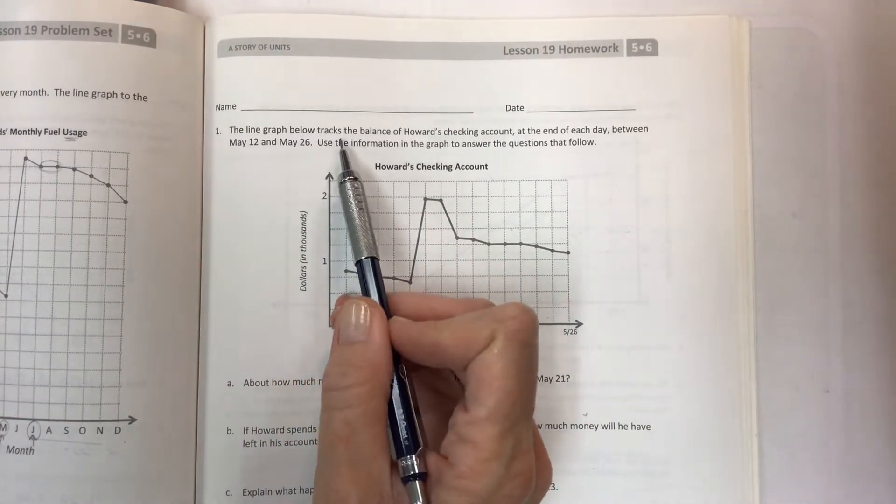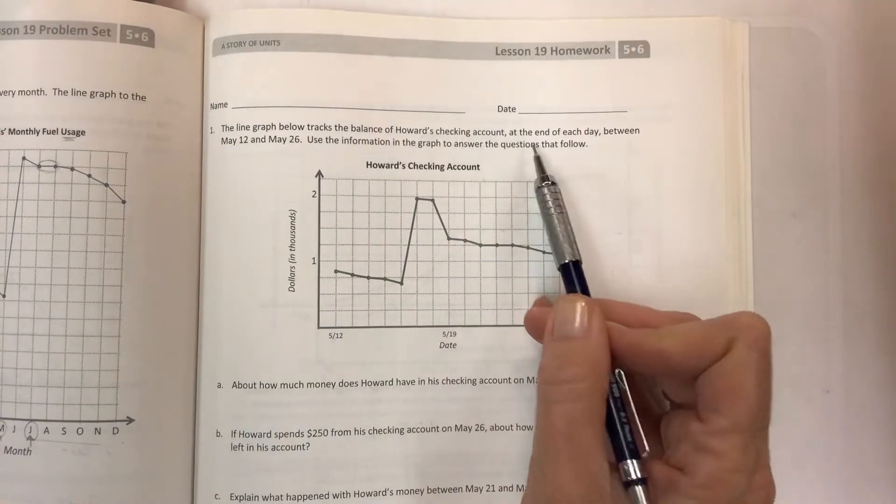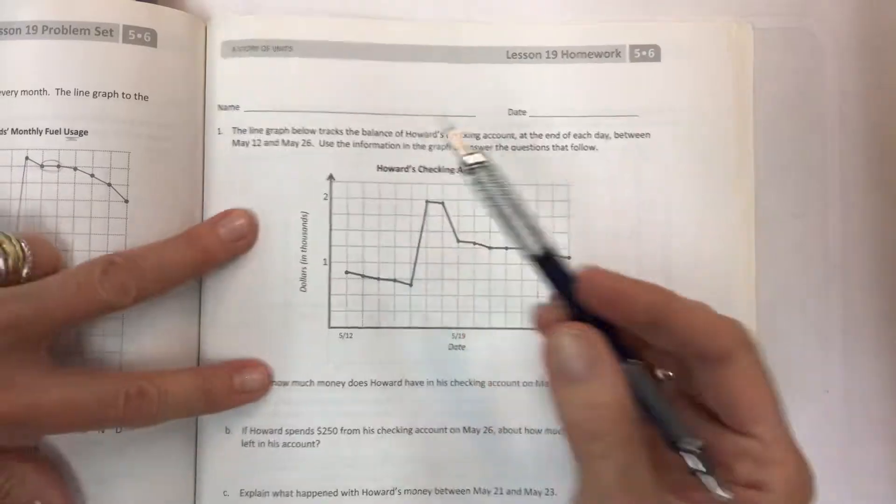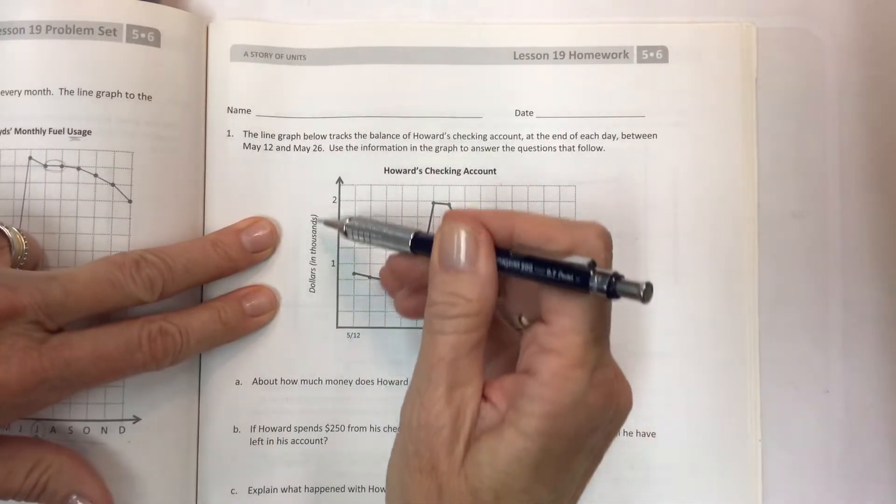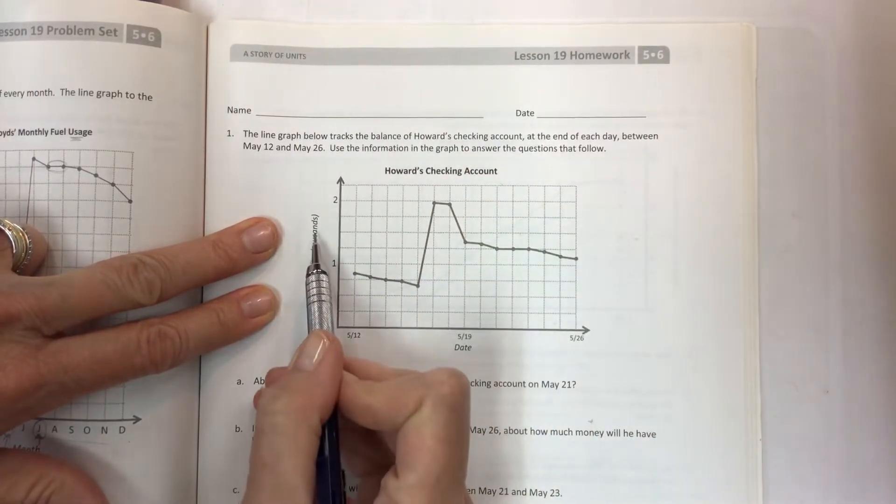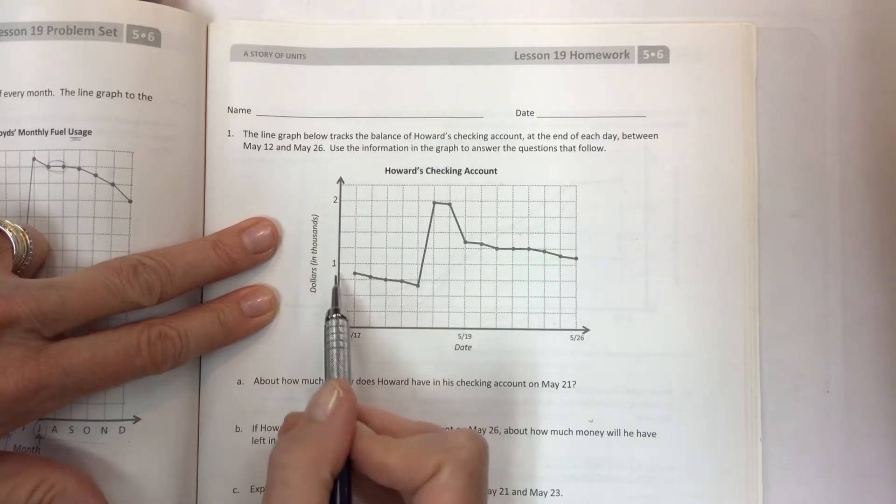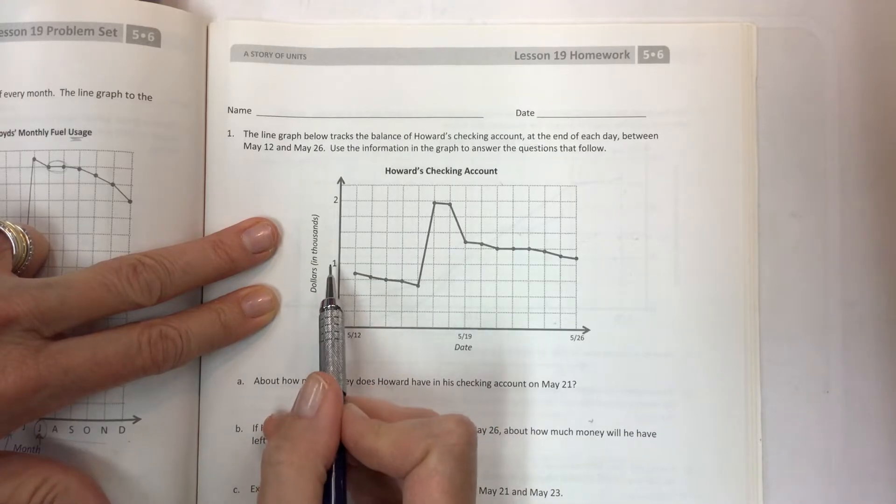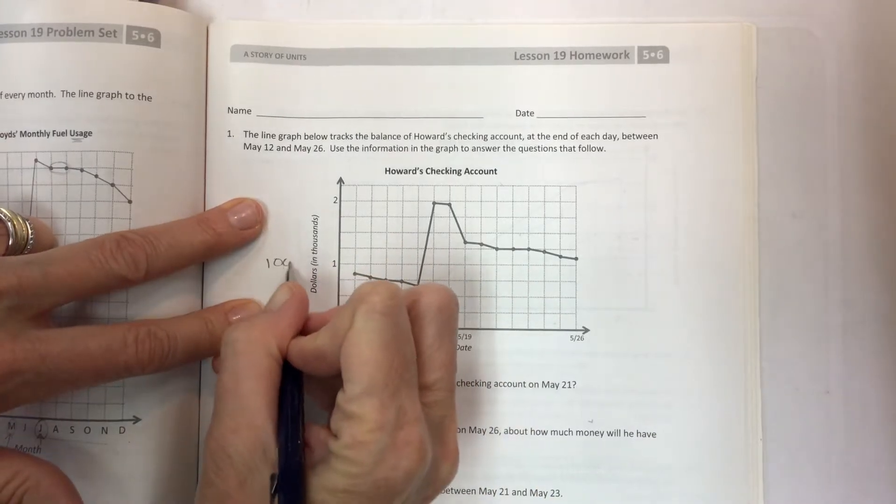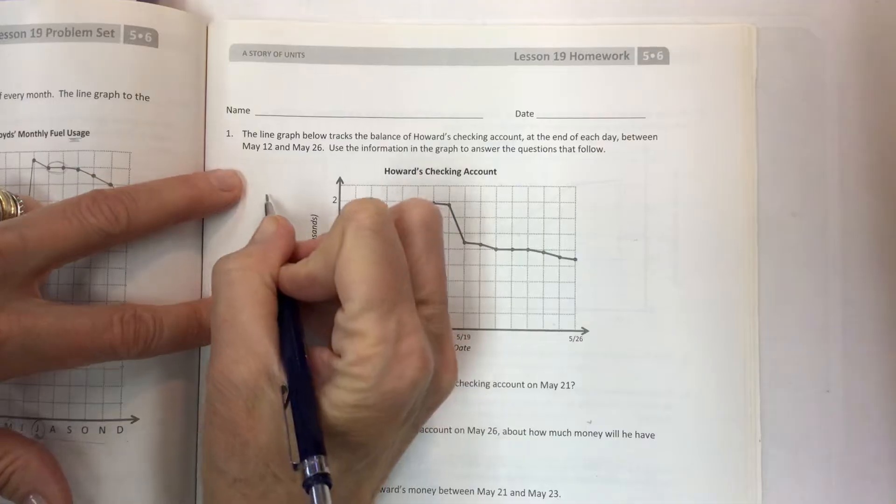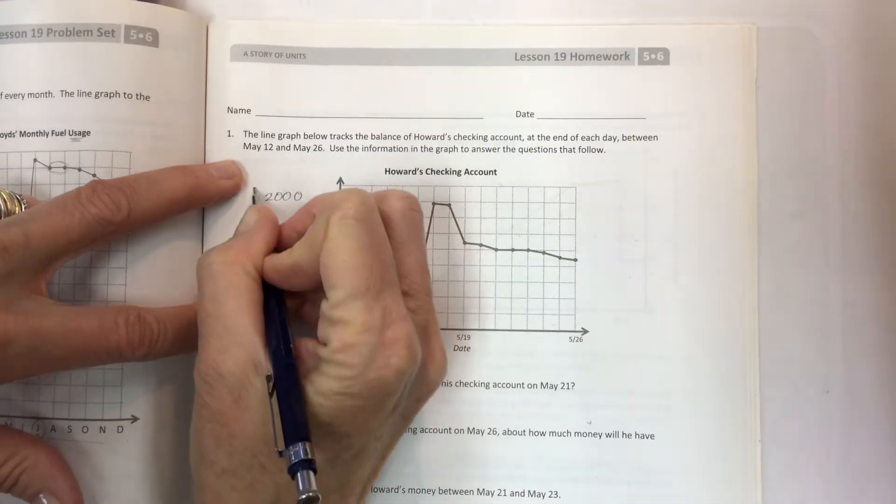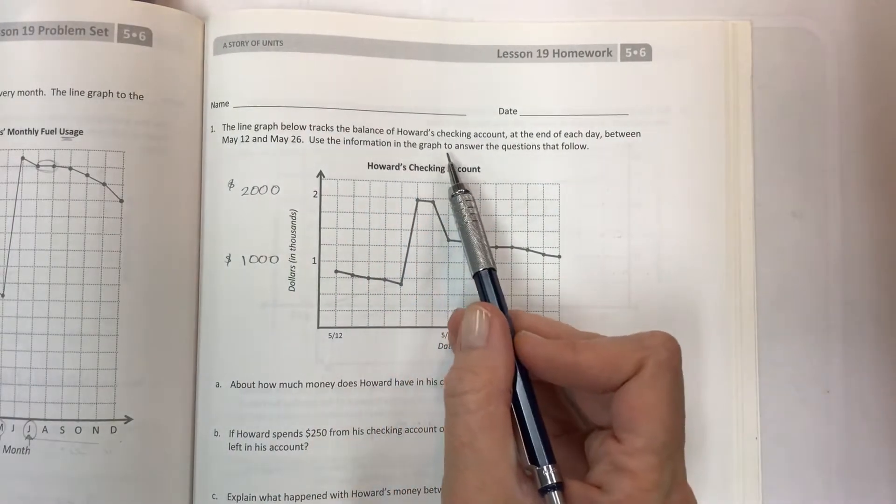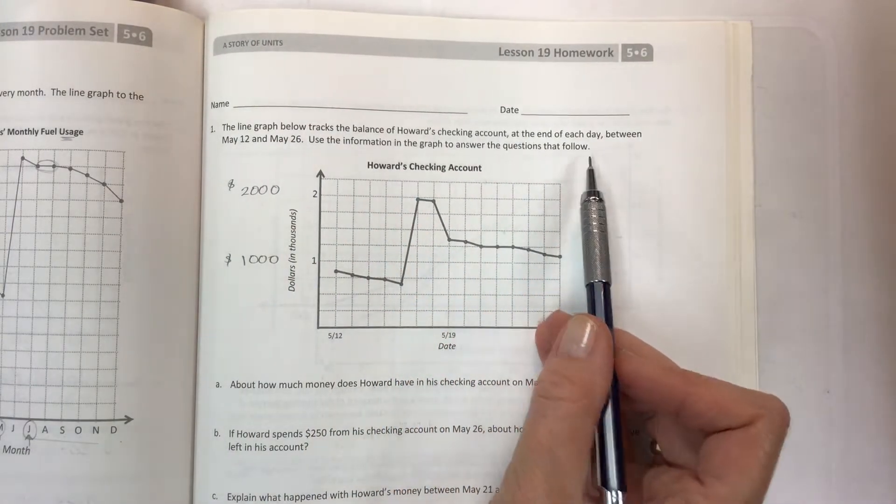The line graph below tracks the balance of Howard's checking account at the end of each day, between May 12th and May 26th. You've got your title, you've got your dollars. This is going to be the money in thousands. Very important. He doesn't just have $1.50 and $2. It's one for $1,000. That's going to be important for you to note because it makes a difference when you're trying to do the calculations. Use the information in the graph to answer the questions that follow.